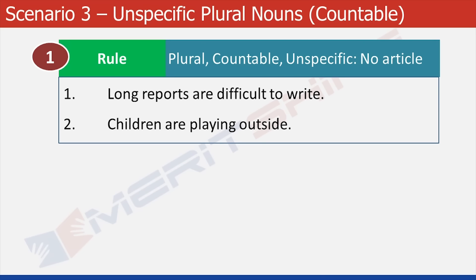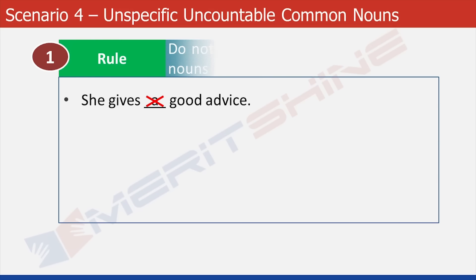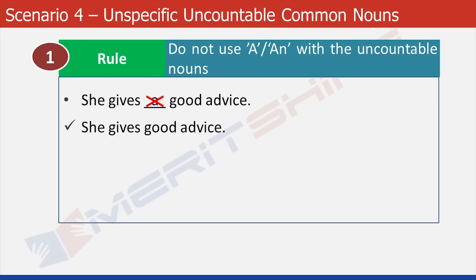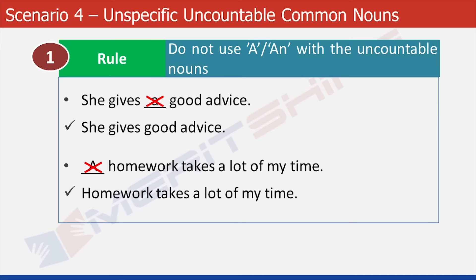Now let us move to scenario 4. Try these: 'She gives a good advice.' Advice is uncountable, and per our framework there would not be any article here. The correct sentence is 'She gives good advice.' Try one more: 'A homework takes a lot of my time.' Homework is uncountable — it will not take any article. The answer is 'Homework takes a lot of my time.'